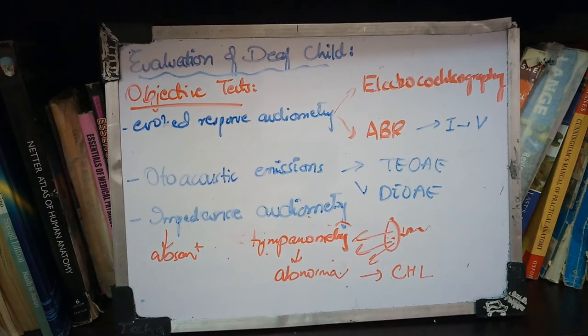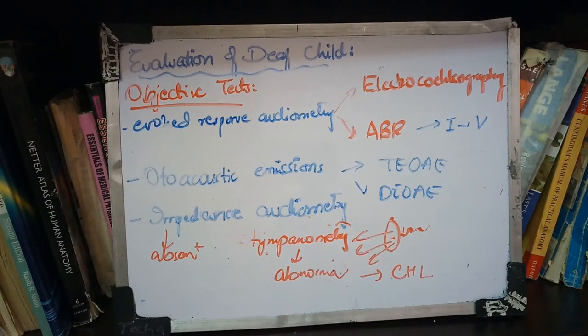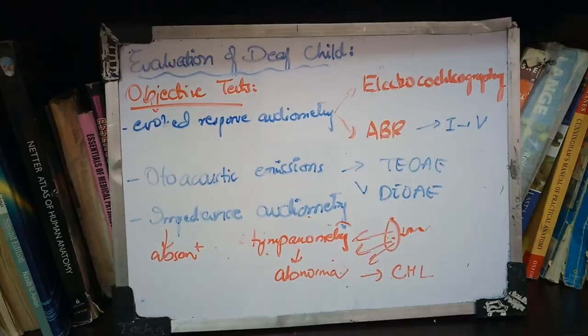Hopefully this is understood, because it is an easy concept and this is why VIVA and MCQ questions are asked on it. So these are all your methods to evaluate a deaf child. In the next part, I will tell you about management. If there is any problem, you can ask me. Thank you.